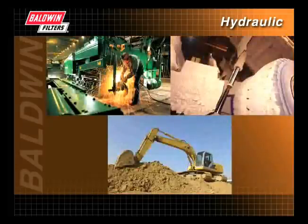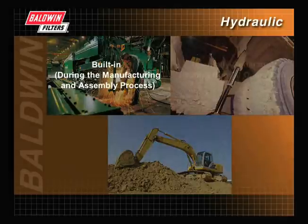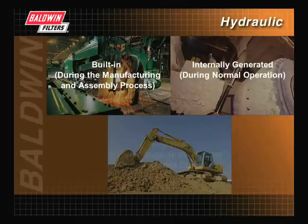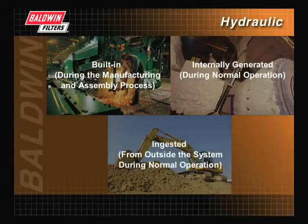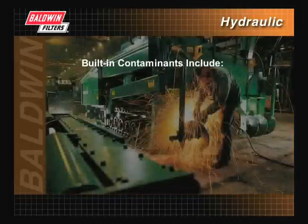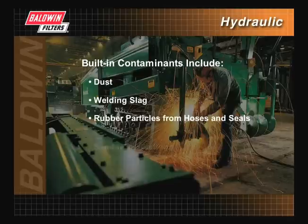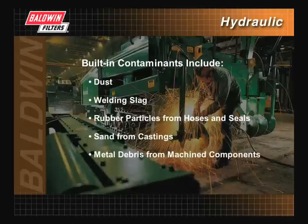Contaminants can enter a hydraulic system in several ways: built-in during the manufacturing and assembly process, internally generated during normal operation, and ingested from outside the system during normal operation. Built-in contaminants include dust, welding slag, rubber particles from hoses and seals, sand from castings, and metal debris from machined components. If the hydraulic system is not properly flushed, these contaminants will be left in the system.